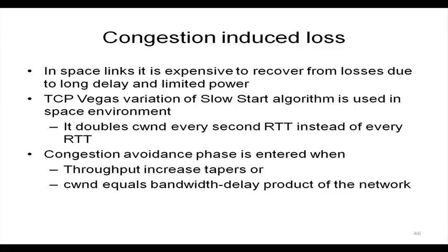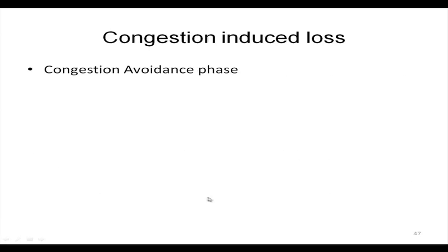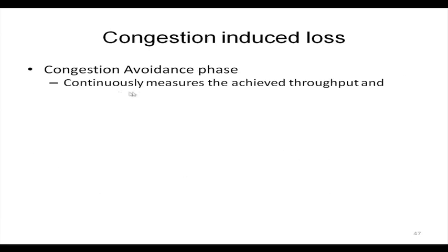TCP Vegas tries to maintain CWnd equal to the bandwidth-delay product of the network. In the congestion avoidance phase it continuously measures achieved throughput and adjusts CWnd accordingly.